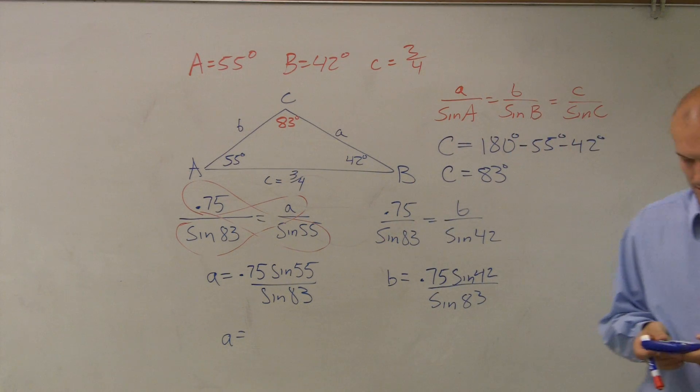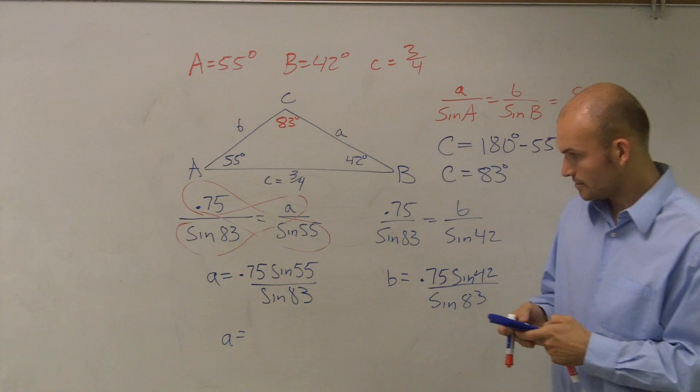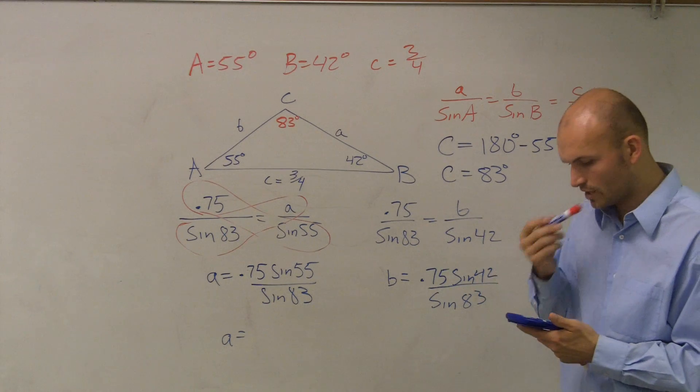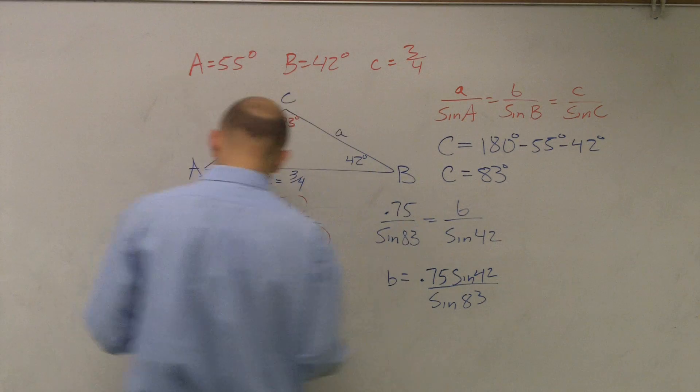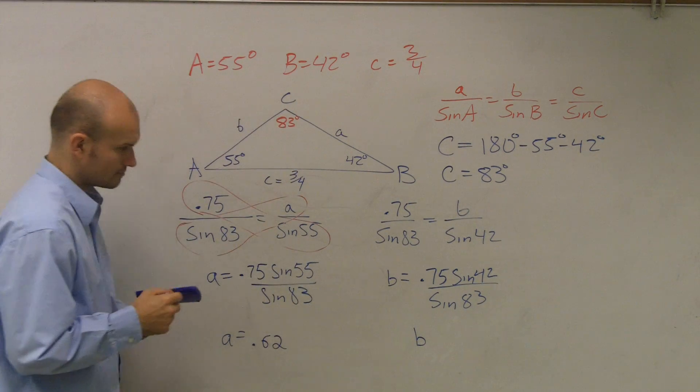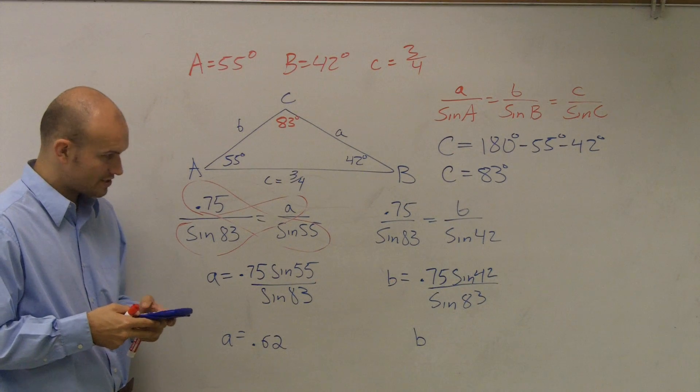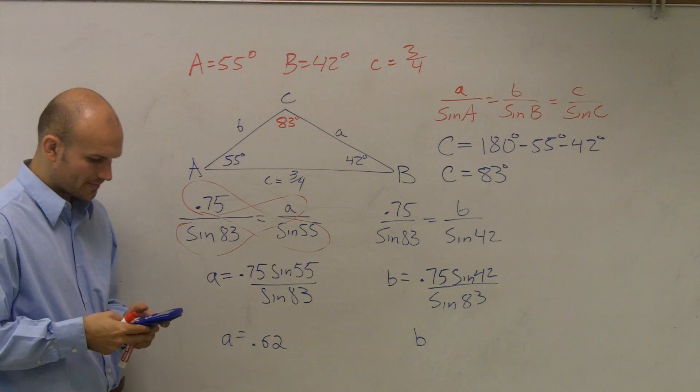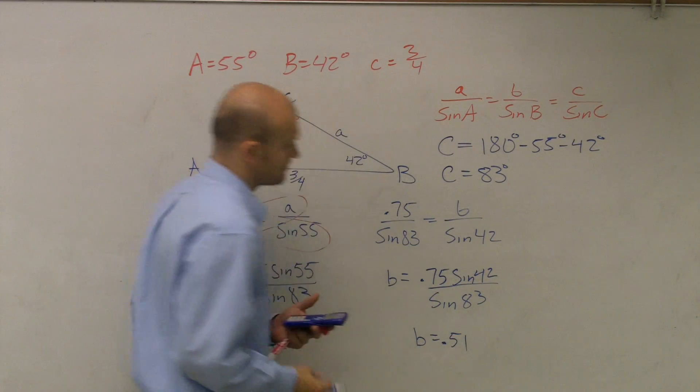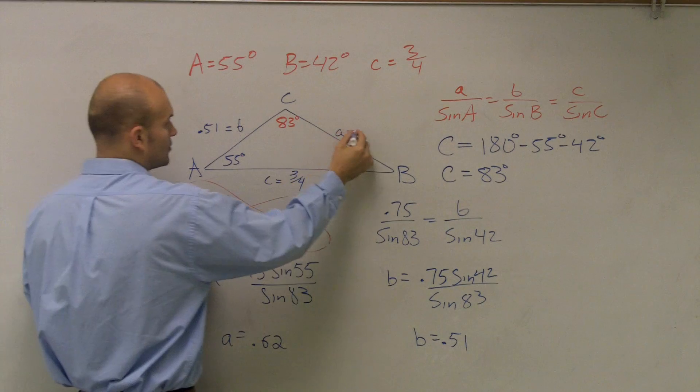So let's just use our handy-dandy calculator. 0.75 times sine of 55 divided by sine of 83, here I get 0.61, and I'll round to the hundredth, so I have 0.62. And then for B, when I do 0.75 times sine of 42 divided by sine of 83, I get 0.5, round to the nearest hundredth, that's 0.51. So therefore, B equals 0.51, A equals 0.62.